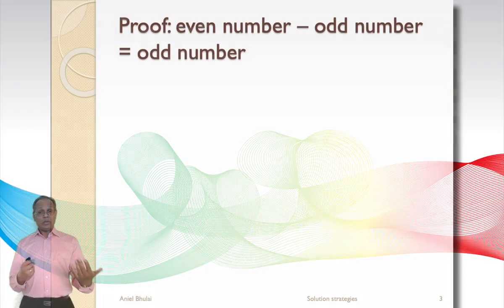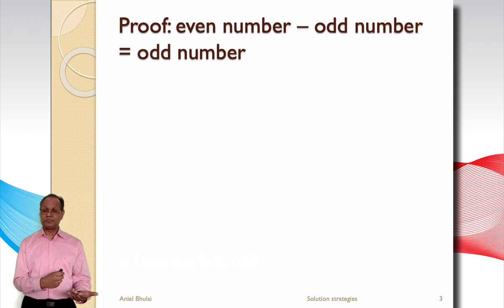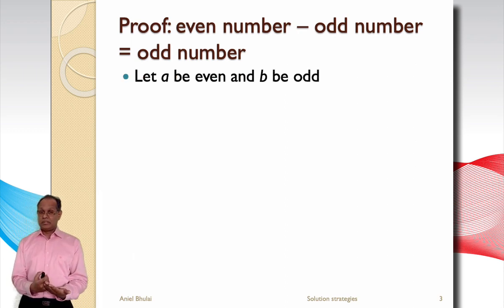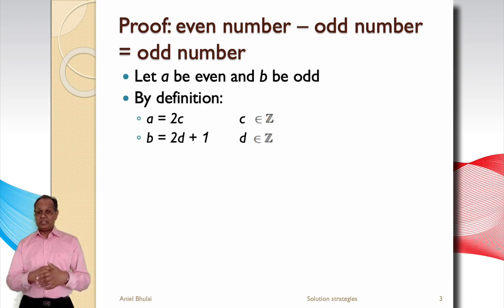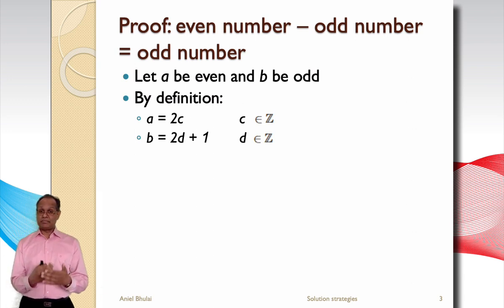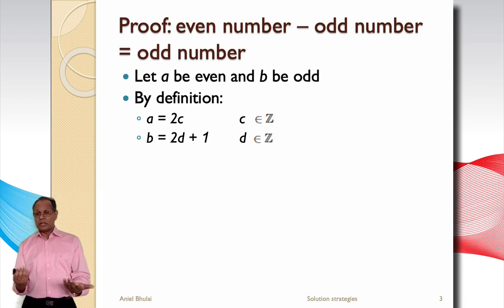So now let's prove that an even number minus an odd number equals an odd number. Let a be an even number and b an odd number. By definition, an even number is two times some number c, and an odd number is two times a number plus 1, as we have seen in the previous slide.